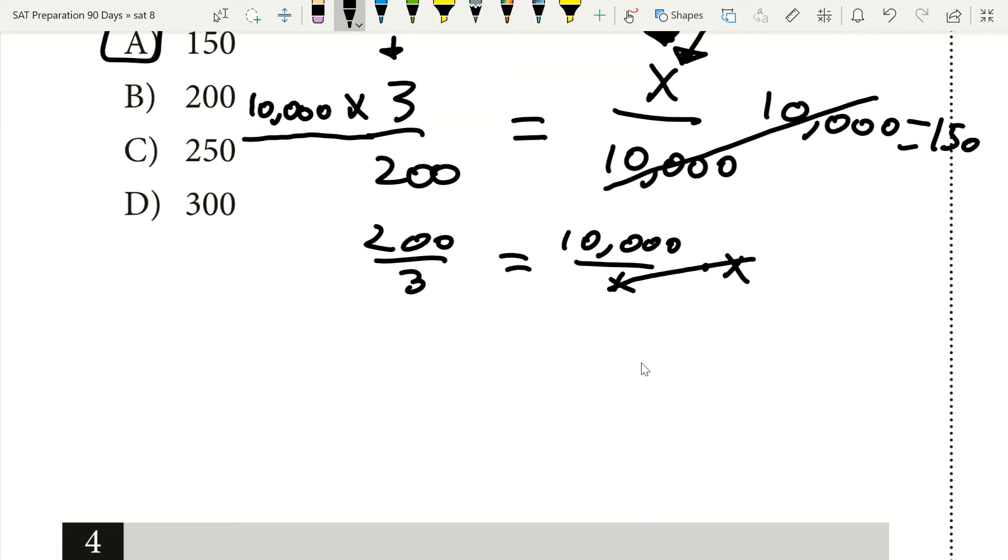then I have to multiply each side by x. That's one step. Then I have to multiply each side by three. Now I've got three times 10,000. Then I got to divide each side by 200.